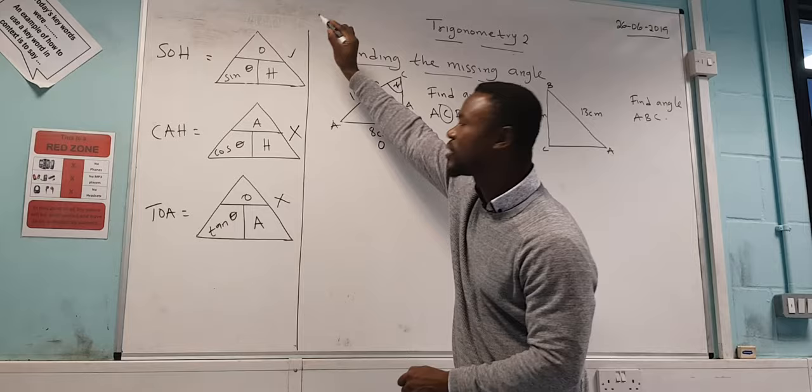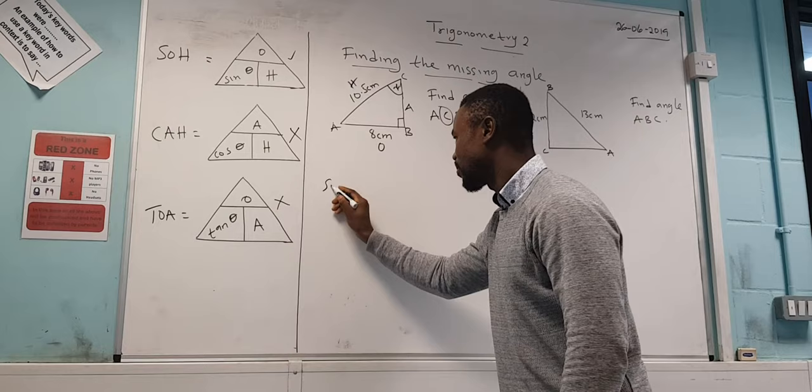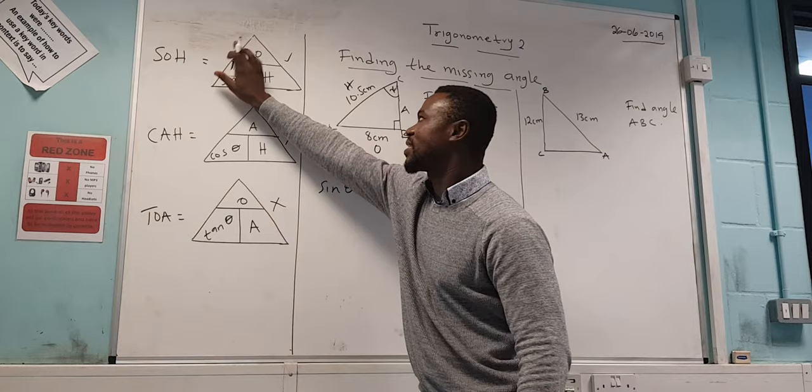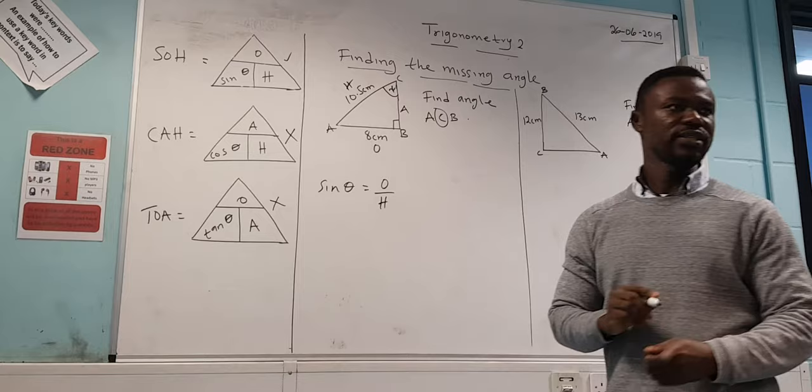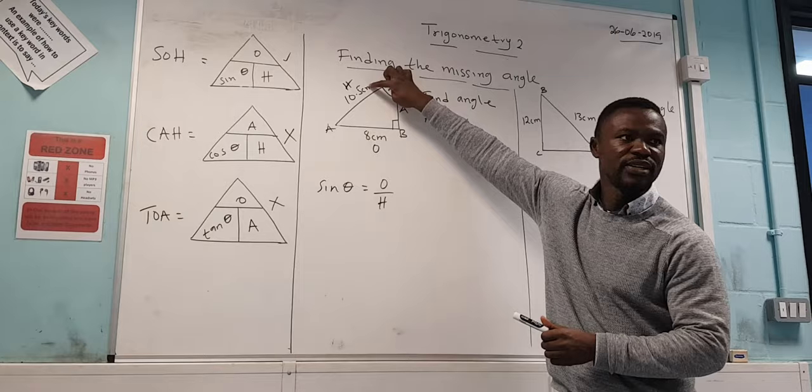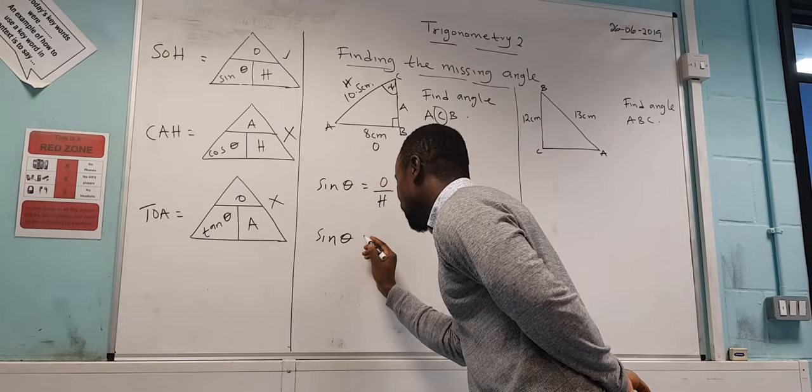So you write it down. Sine theta—sine of the angle, theta means the angle—equals, if I cover this it means opposite over H, hypotenuse. So O over H. The rest is put in the numbers. Which one is our H? 10.5 and our O is 8. So sine theta equals 8 divided by 10 point 5.